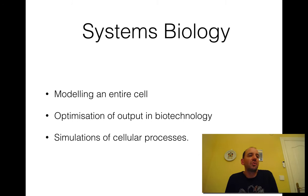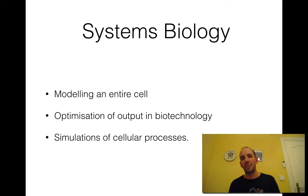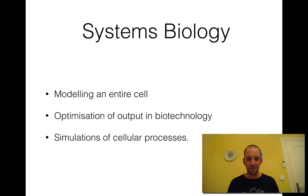For instance, if you want to use a cell to produce something, we can tune the system so we can produce more of that protein — for example, produce more ethanol if we want to use it for fuel. And we can use simulation of all these things together.